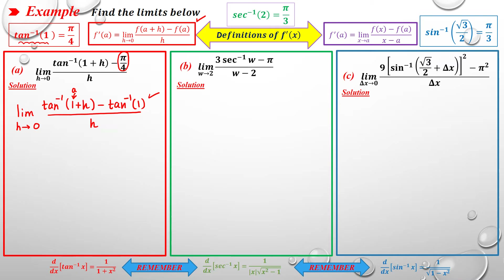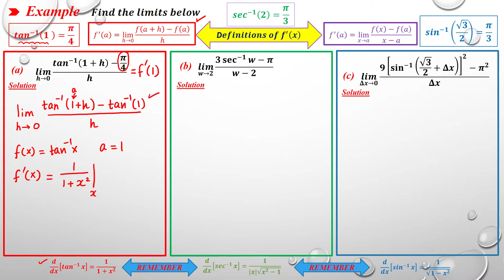So this limit equals f'(1). We find the first derivative: f'(x) = 1/(1+x²), which is the derivative of arctan(x). Then we replace x by a = 1, giving 1/(1+1) = 1/2. So the value of the limit for part A is 1/2.